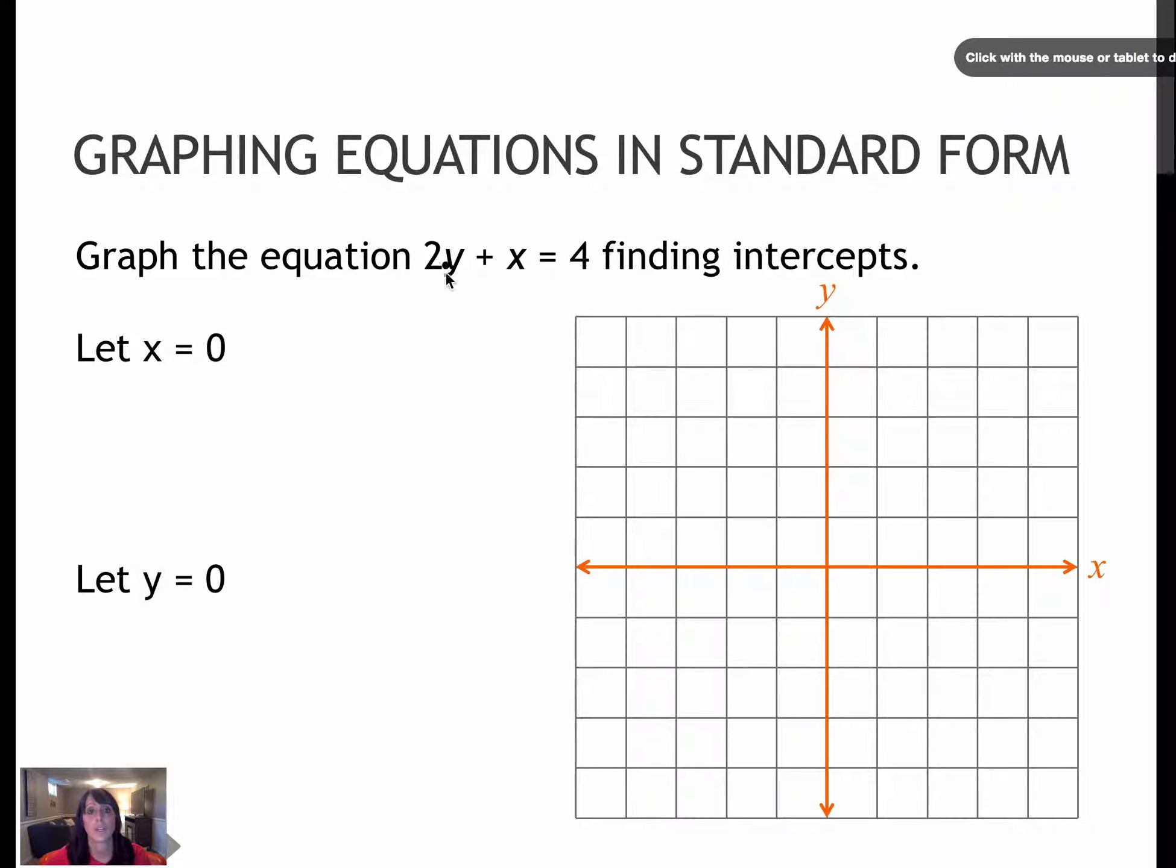Again, I'm going to do this one the same way. So if I let x equal 0, that means 2y + 0 = 4. 2y plus 0 is 2y. 2y = 4 means y must be 2, so (0, 2).